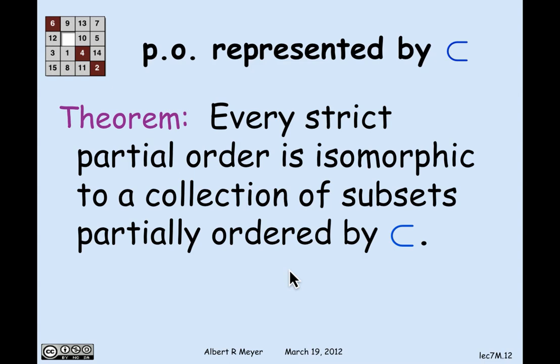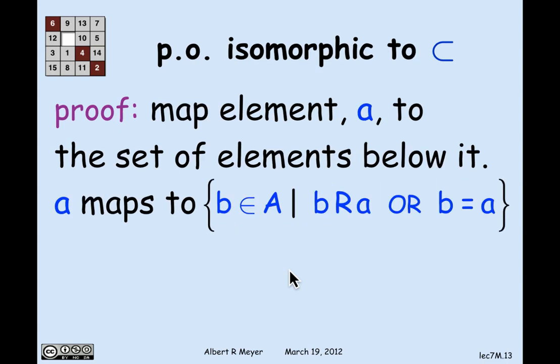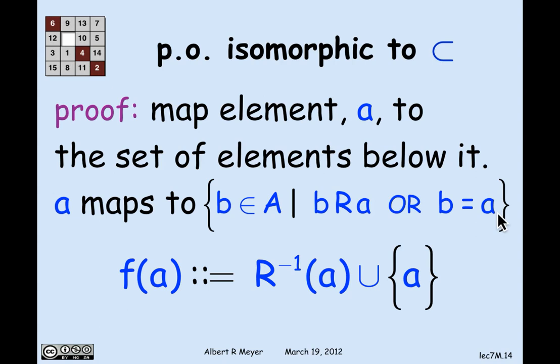And the proof, actually, of this is quite straightforward. What I'm going to do to find an isomorphism is you give me your arbitrary strict partial order r. And I'm going to map an element a in the domain of r to the set of all of the elements that are, quote, below it. That is, all of the elements that are related to r. So a is going to map to the set of b's such that b, r, a, or b is equal to a. And that is added for a technical condition. Remember, r is strict. So a is not related to a under r, but I want it to be in the set that a maps to. So I'm throwing that in. Another way to say this is that the mapping f of a is equal to r inverse of a union a.